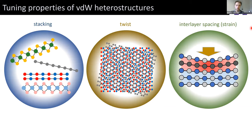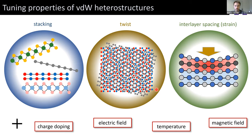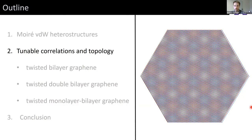Putting all of this together, van der Waals heterostructures are very tunable systems with many experimental knobs. You can stack different materials in different orders, twist layers within the structure, change the interlayer spacing, and apply strains. This is in addition to the things we already like about 2D materials: modifying with charged doping in electric fields via field effect transistor geometries, and of course temperature, magnetic field, and so on. So there's really a lot of experimental tunability, which makes these platforms very attractive to investigate.